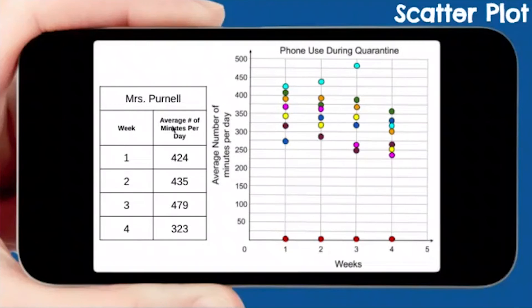Miss Purnell. It is going to be the light blue, right? Week one, 424. Week two, 435. Week three, 479. Week four, 323. Good. Then you have Miss Salhever. Which color is Miss Salhever? Week one, 348. Right here, the yellow. Week two, 323. If you got yellow, you're right. Week three, 343. Week four, 253. A lot less there.